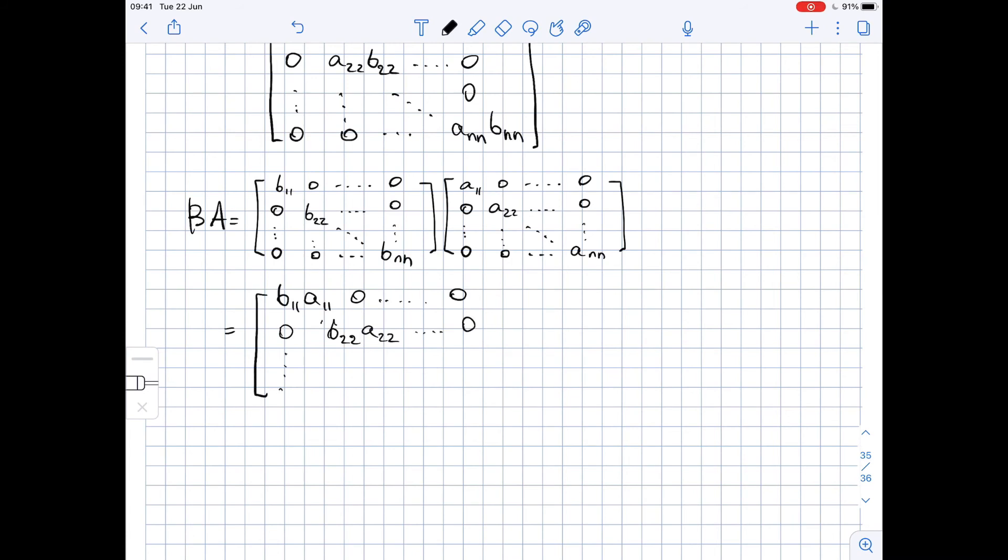Then the rest in the first column are zeros, the rest in the second column are zeros. Here the rest are zeros, here the rest are the products of A and B. So here we have BₙₙAₙₙ, and here the rest are zeros.